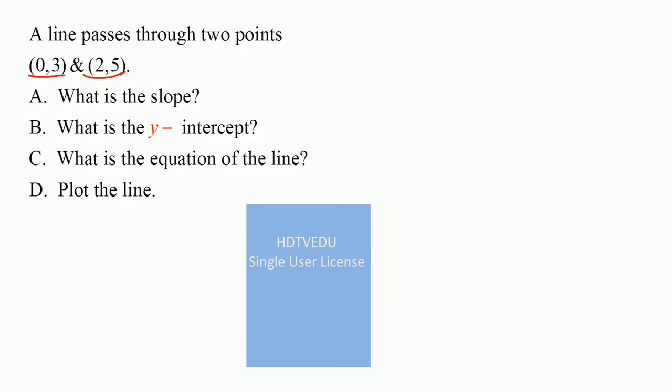When x equals 0, y is equal to 3. And when x equals 2, y is equal to 5. What is the y-intercept? Where does the graph touch the y-axis? Do not forget on the y-axis x is equal to 0. Part C, what is the equation of the line? And part D, plot the line.